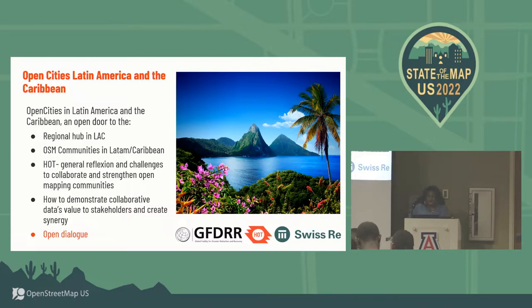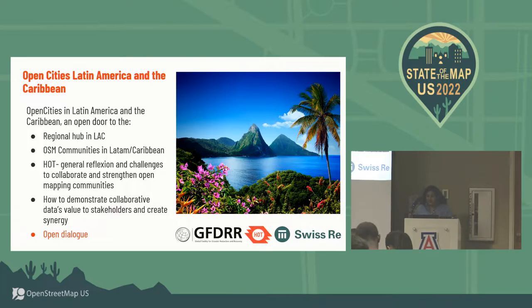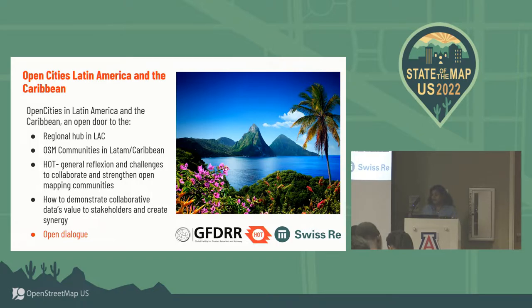Open City is a methodology that aims to create data for risk management in specific localities. The specificity of this methodology is really to engage the active participation of local communities and open mapping communities as well. What we want to do is really generate missing open data for public policies and consolidate long-term capacities, because the flow of data that comes into OpenStreetMap can then be maintained.